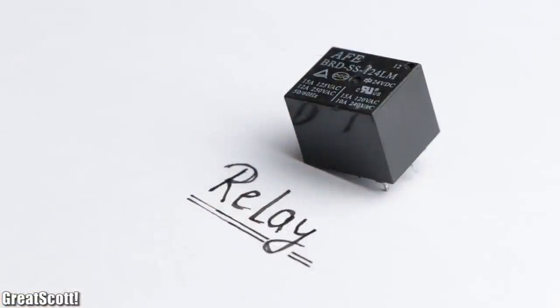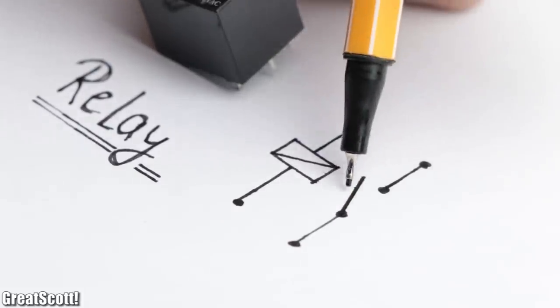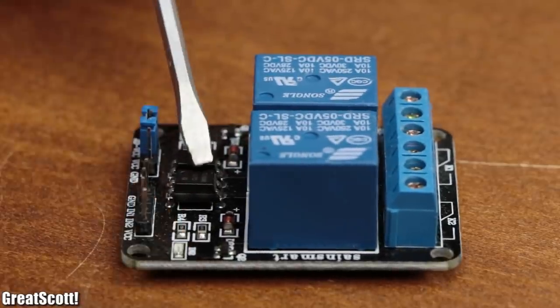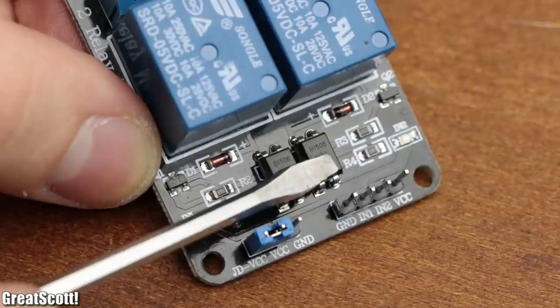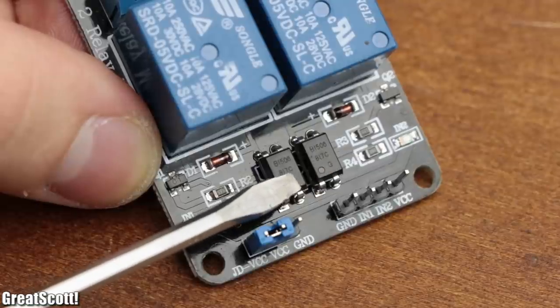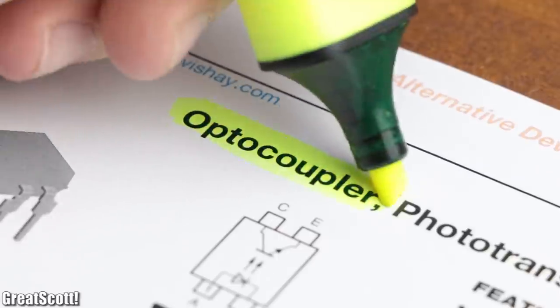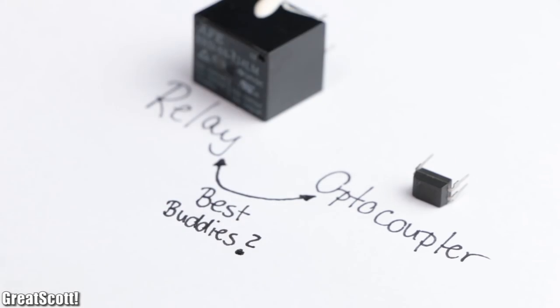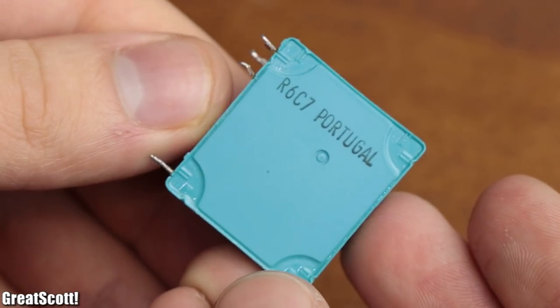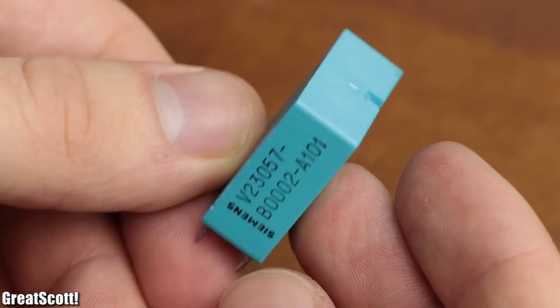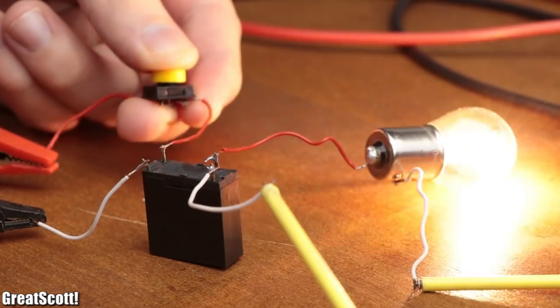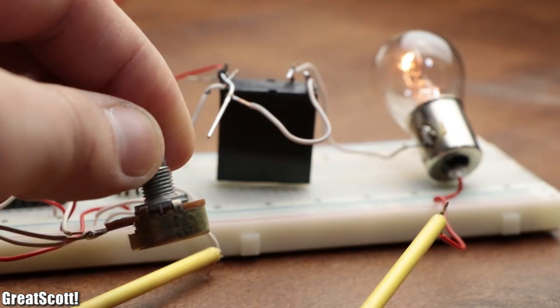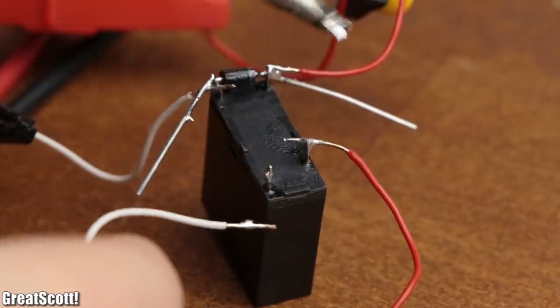This component is called a relay, which is, in a nutshell, an electromechanical switch. You sometimes find such relays next to a 4-pin IC, like this 817 IC right here, which according to its datasheet is a so-called optocoupler. But what kind of relationship do those two components share? Well, we are about to find out in this Electronic Basics episode, in which we will learn what makes those two components special, when to use them and, most importantly, how to use them properly. Let's get started.